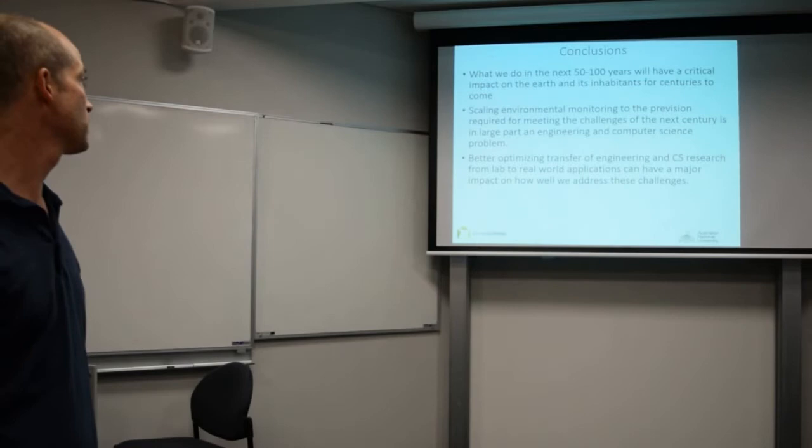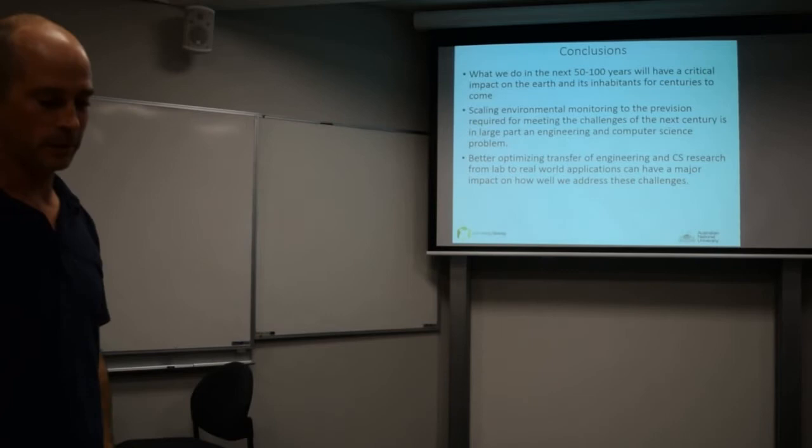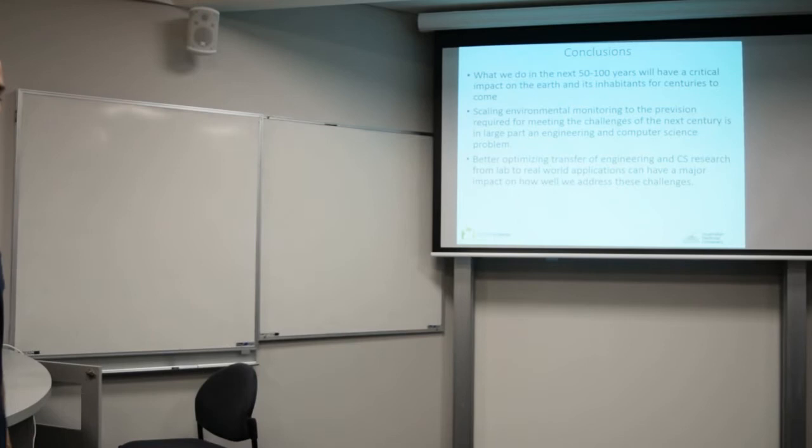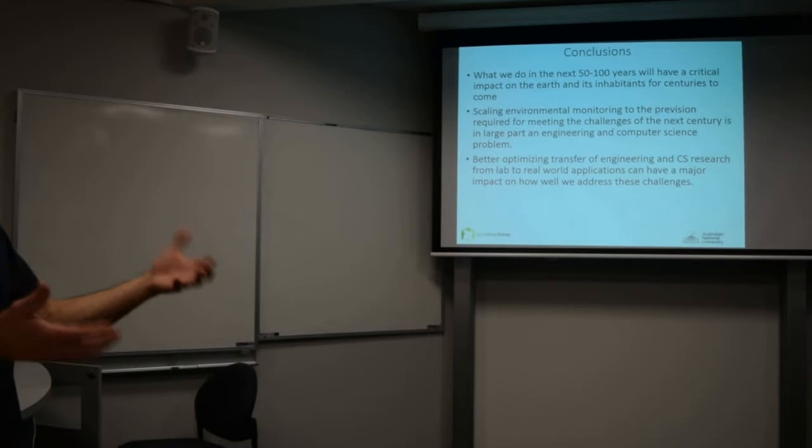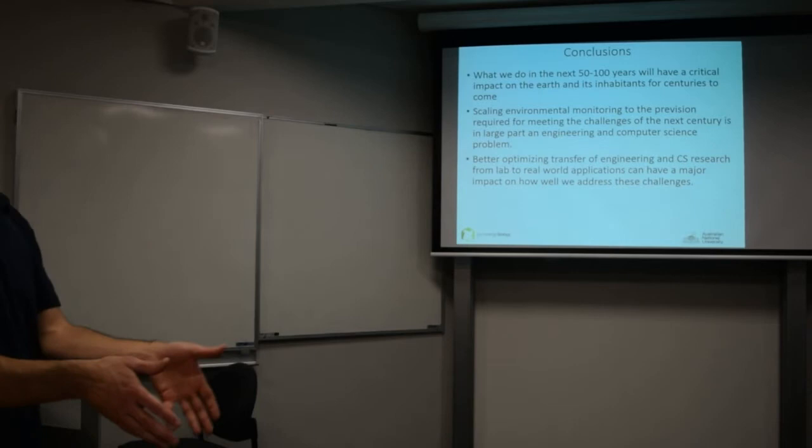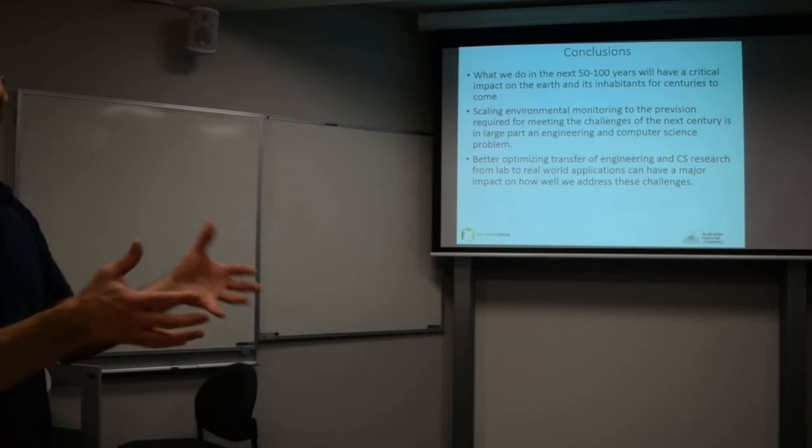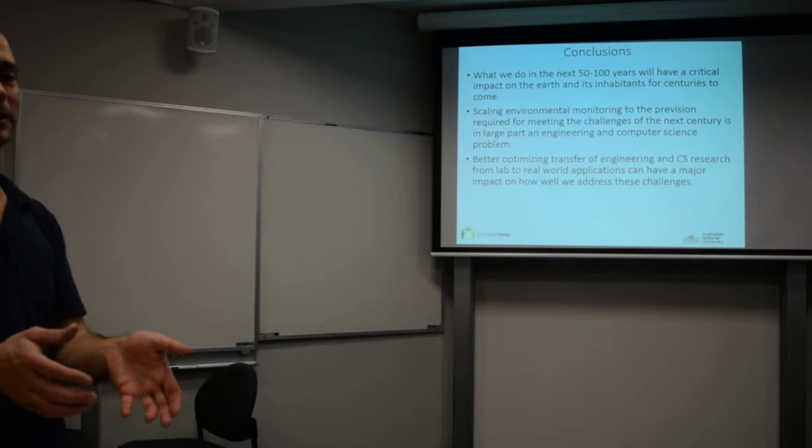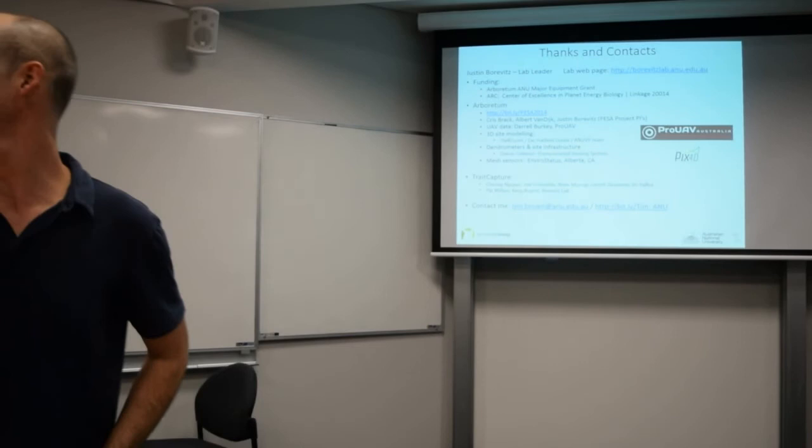What we do in the next 150 years is going to have a critical impact on the Earth and its inhabitants for a long time. Scaling environmental monitoring to the precision that's required for meeting these challenges is in large part an engineering and computer science problem. How we tackle that problem and how we help optimize the transfer of research from what you guys do to real world applications really can have a major impact on how well we address these challenges. More and more what I come up against in my work is I need to hire another computer scientist to solve this problem, not another biologist, because the technology is almost there. So much of this stuff has just appeared and it's almost usable, but the hardware needs to be cleaned up a little and the software needs to be written to turn all that measurements into actual data. Thanks for your time.